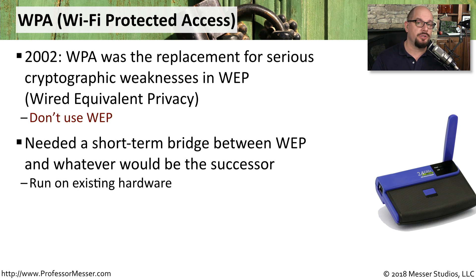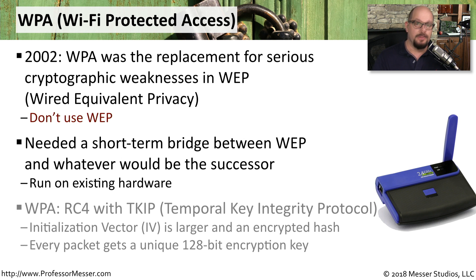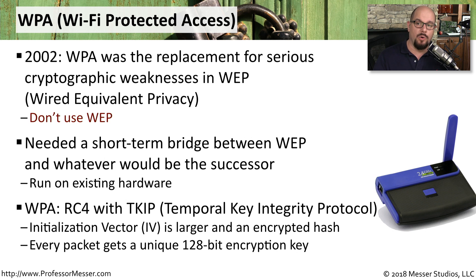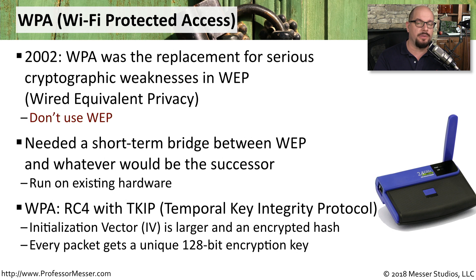We needed some short-term protection. We couldn't use WEP any longer and weren't quite sure where we would go with encryption on wireless networks. The solution was a mid-term encryption protocol named WPA, or Wi-Fi Protected Access. WPA used RC4 ciphers with TKIP, which is Temporal Key Integrity Protocol. It was able to take an initialization vector that was much larger than what we were using with WEP, and every packet sent over a WPA network included a unique 128-bit encryption key.